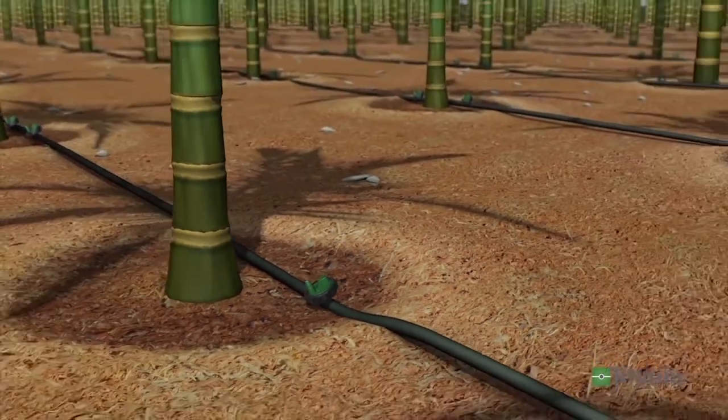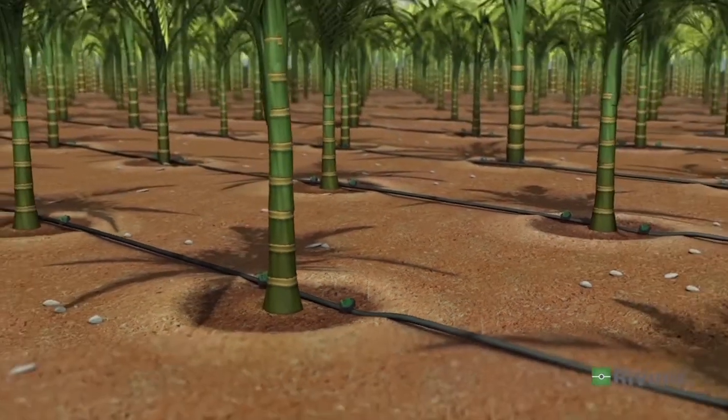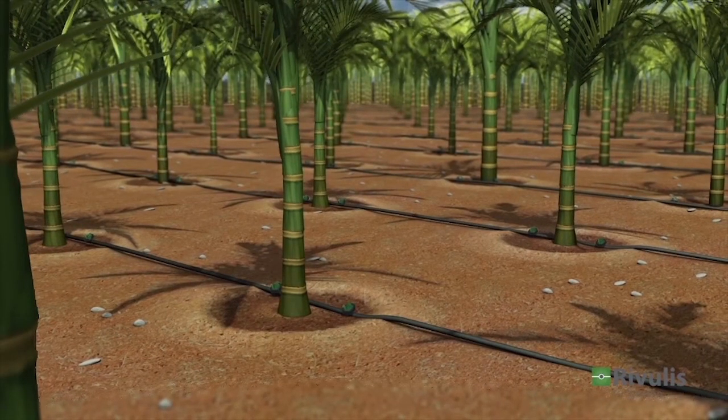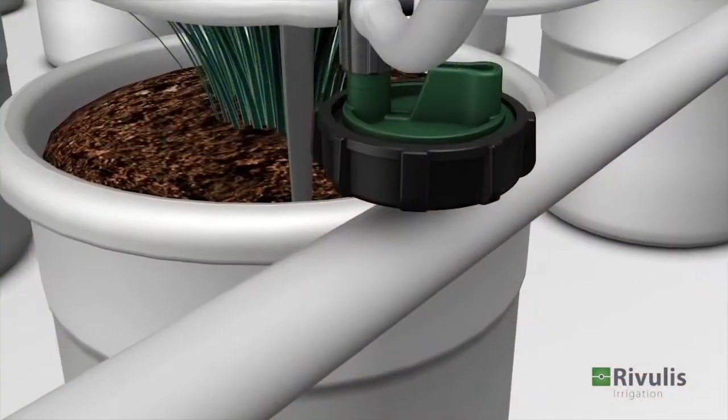In orchards, the e1000 drippers can be inserted into a polyethylene pipe laid along the tree lines.